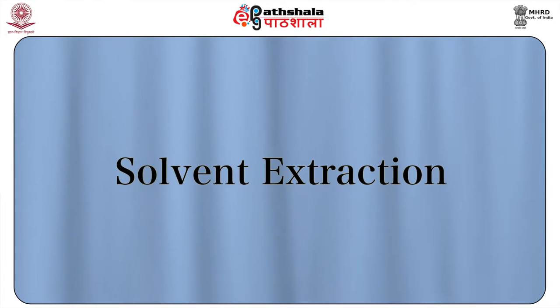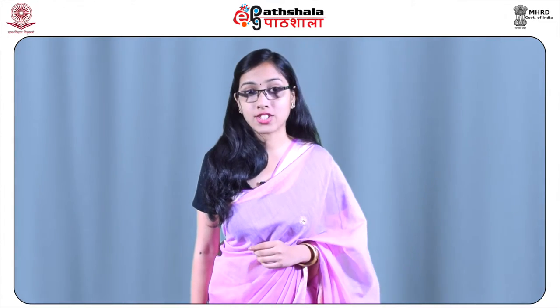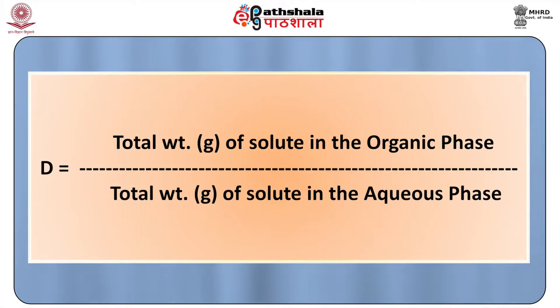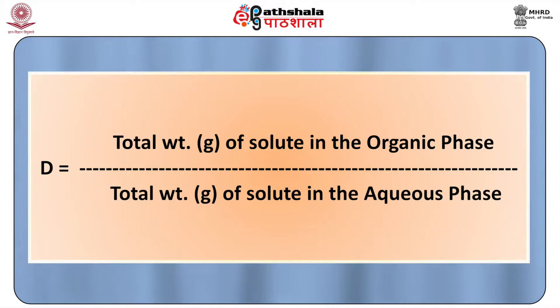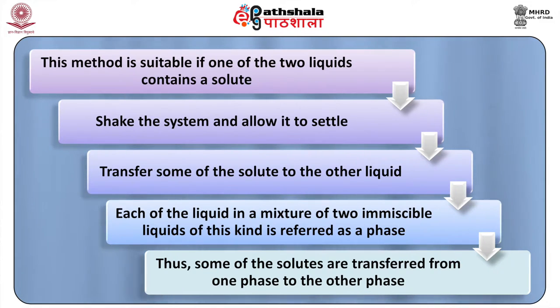The second process is solvent extraction. A system of two immiscible liquids — those which cannot be mixed together — is required for the separation of material by solvent extraction. The active constituent should be unevenly soluble in the system, thereby enabling extraction of the constituent from one phase to the other. The efficiency of extraction is determined by the distribution coefficient D, where D equals the total weight in grams of solute in the organic phase divided by the total weight in grams of solute in the aqueous phase. If one of the two liquids contains a solute, the system is first shaken and then allowed to settle down, and some of the solute is transferred to the other liquid.